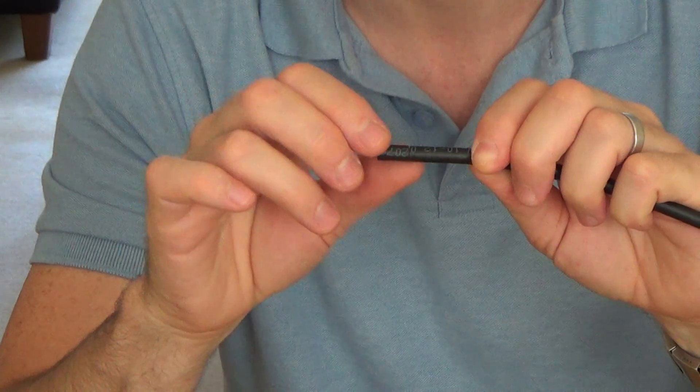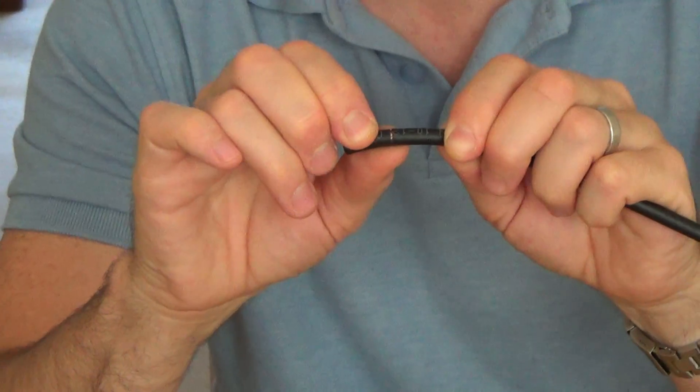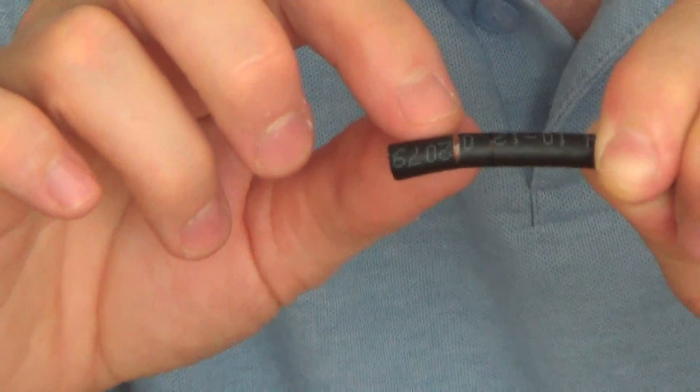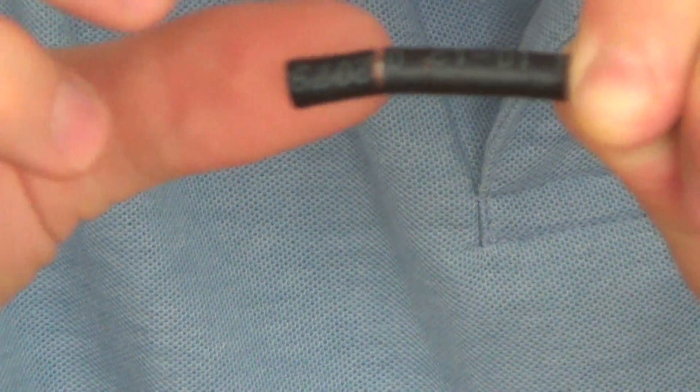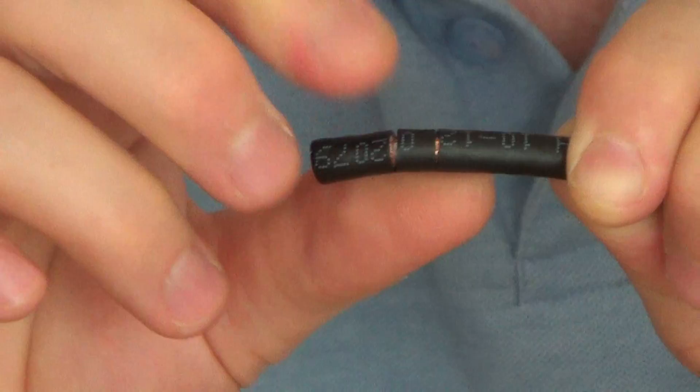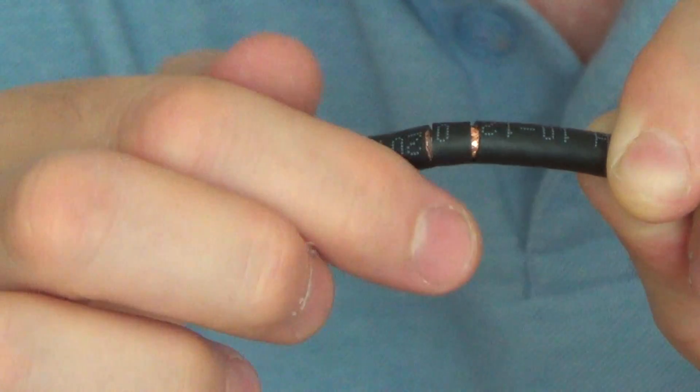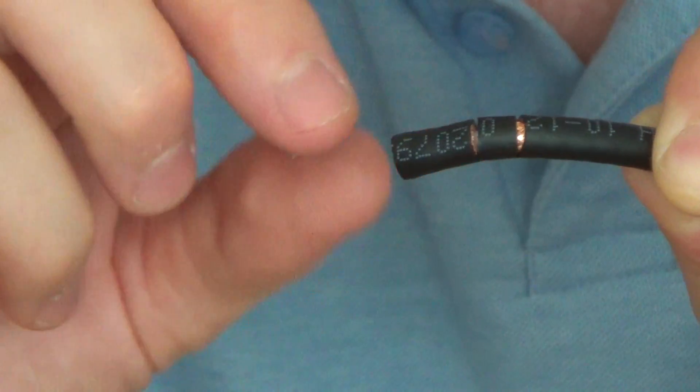And what that should do is, it should put two cuts on the cable. One cut should go right the way through to the central conductor, getting rid of all the braiding, the foil and the foam dielectric. And the other cut should just be taking off the outer sheath, the actual black sheath itself and leaving everything inside intact.